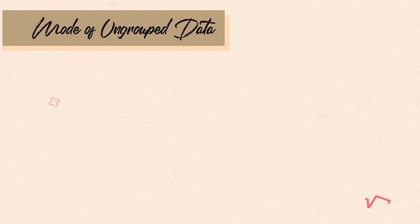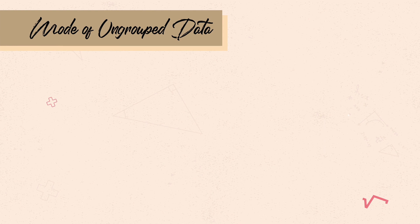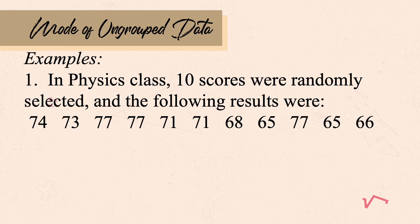Mode is the datum or data that is most frequently seen in the data set. In a physics class, 10 scores were randomly selected: 73, 77, 77, 71, 71, 68, 65, 77, 65, and 66. There is no need to arrange this in increasing order when finding the mode. All you have to do is choose the datum most frequently seen. In this case, the mode is 77, since 77 appears most often in the given data.